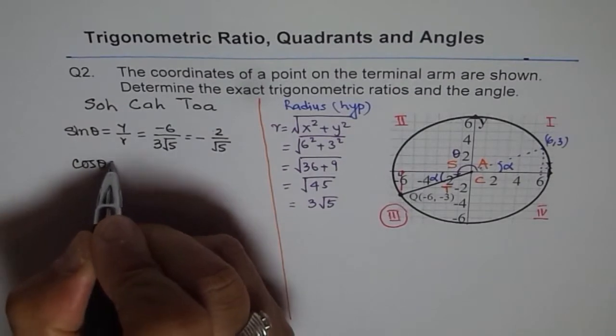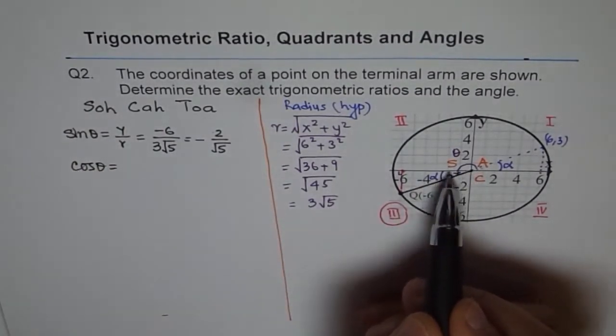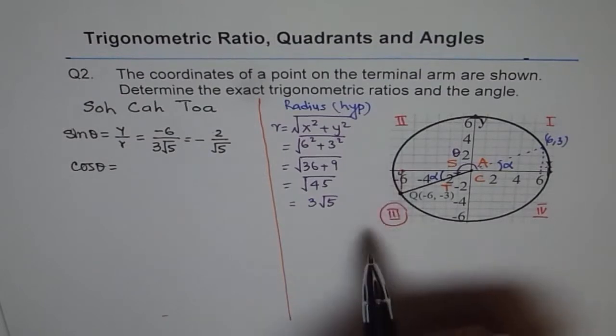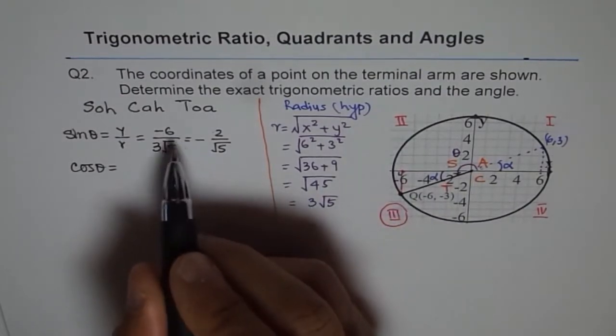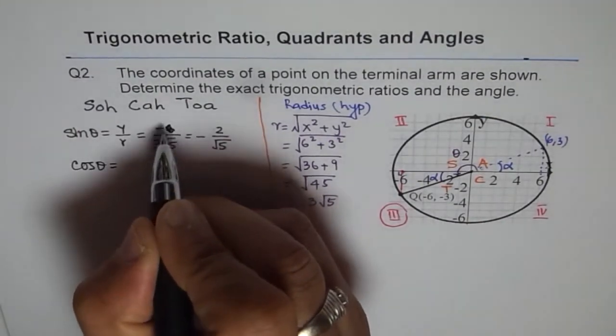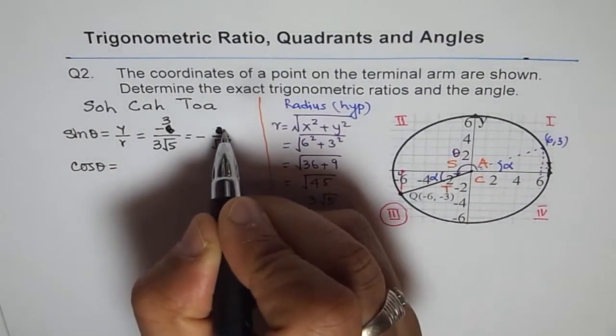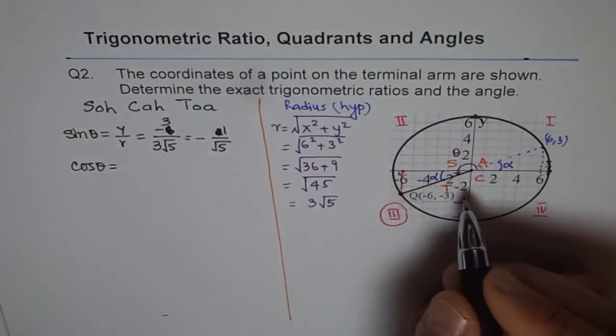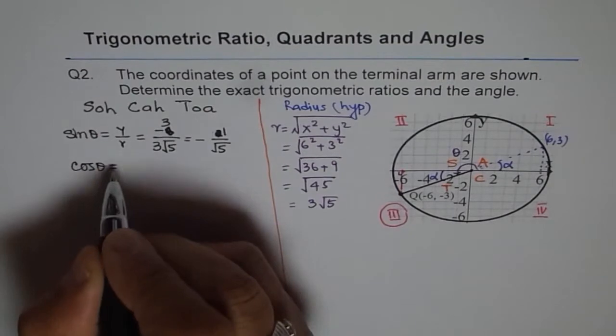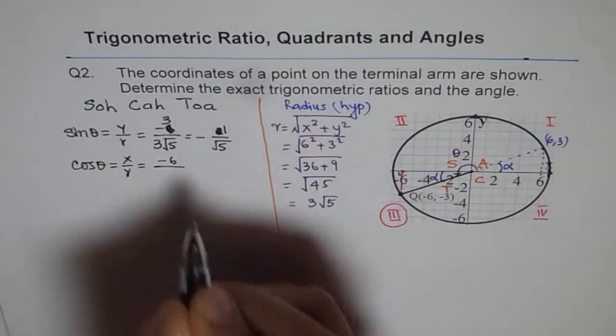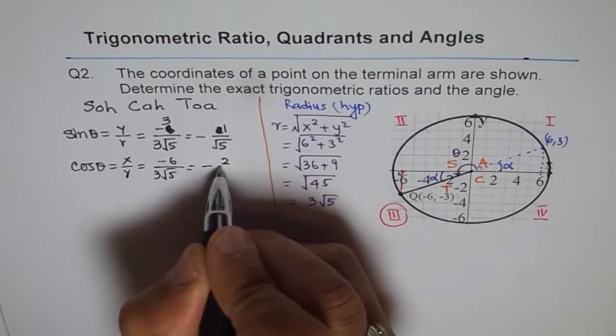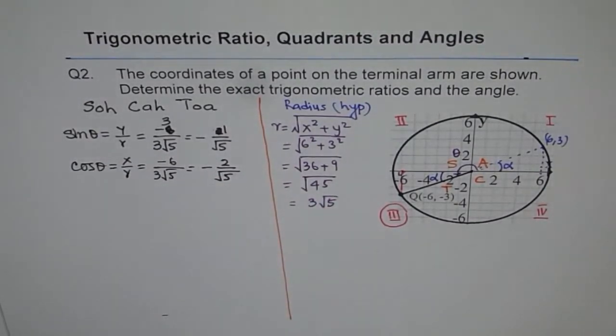Now cos theta. Cos theta is the adjacent value. That means the x value of minus 6. So we will write x over r, which is minus 6 over 3 square root 5. 3 square root 5. And this goes 2 times. And we get minus 2 over square root 5. And that is the value of cosine theta.